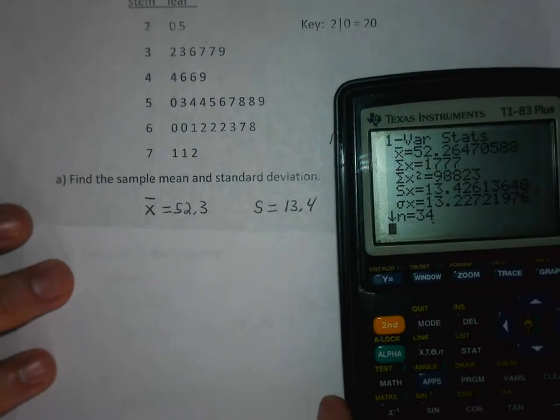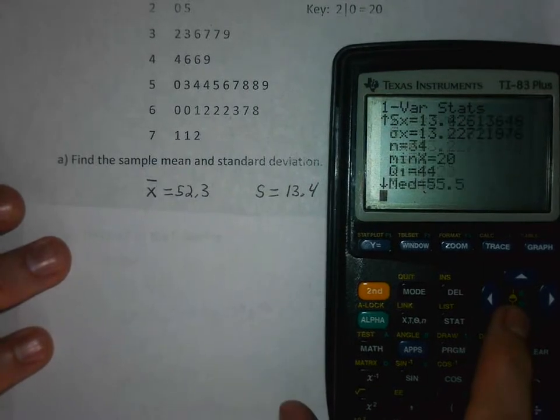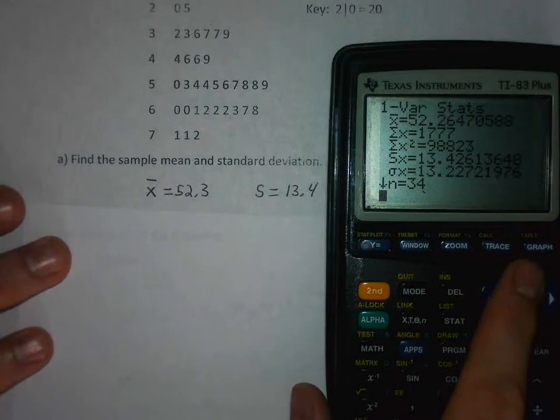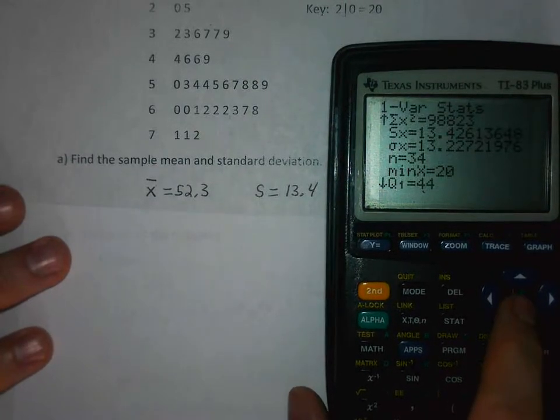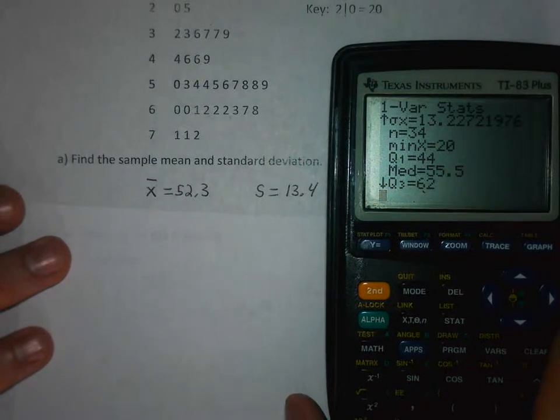Notice there it gives you n, the sample size is 34. If I scroll down more, this will also give you the quartiles, the median, the max and the min - basically the five number summary.